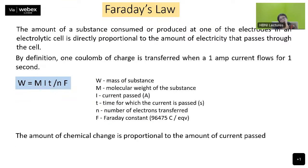Coming to another very important concept: Faraday's law. The amount of substance consumed or produced at an electrode in an electrolytic cell is directly proportional to the amount of electricity passing through the cell. One coulomb of charge is transferred when one ampere of current flows for one second. The formula is W = MIT/nF, where W is the mass deposited, M is the molecular weight, I is the current, T is time in seconds, n is the number of electrons transferred, and F is the Faraday constant.